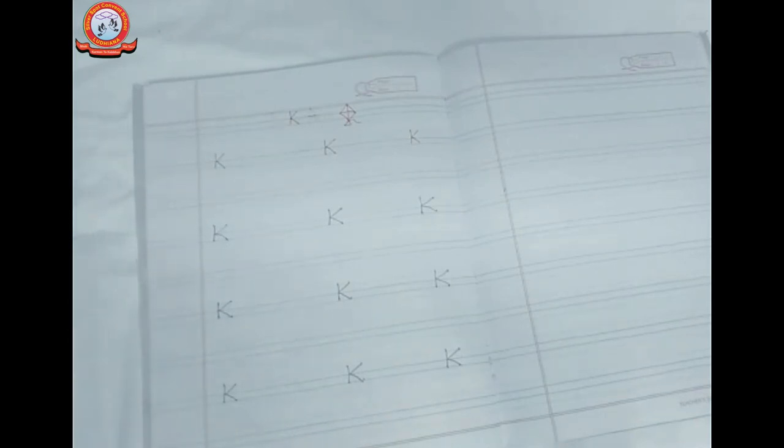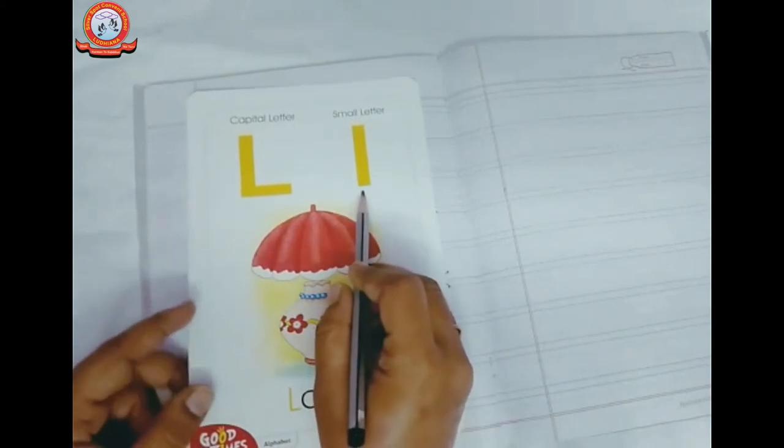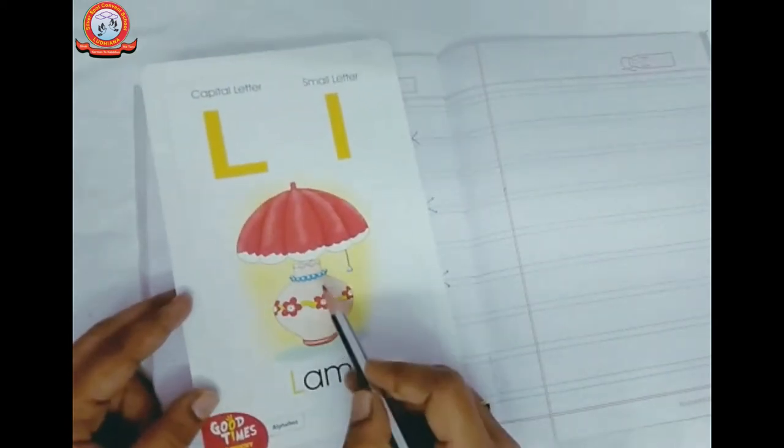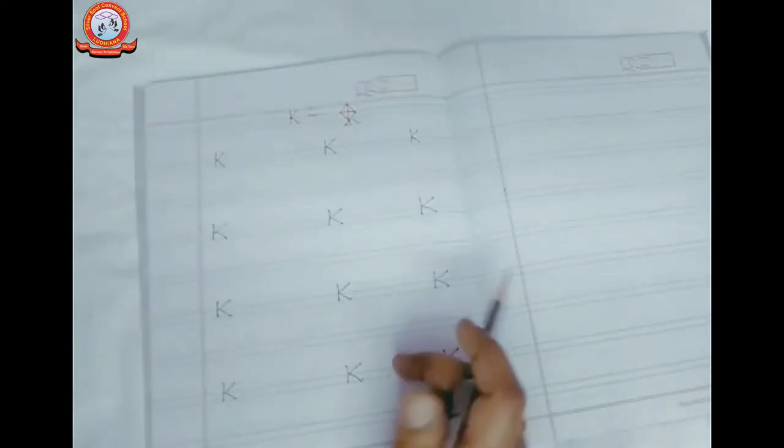Tell me what comes after K. K is what comes after K? A, B, C, D, E, F, G, H, I, J, K, L. See? This is L. L says L. L leaves.